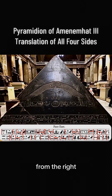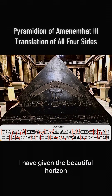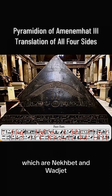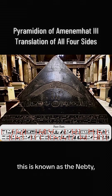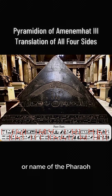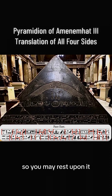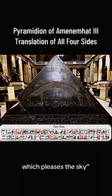Reading the second row from the right: Word spoken by the sovereign. I have given the beautiful horizon, the two ladies — which are Nehbet and Wajet, the vulture and cobra goddess protectresses of Upper and Lower Egypt. This is known as the Nepti, the third title or name of the pharaoh. Continuing: and he who takes the inheritance of the two lands, so you may rest upon it, which pleases the sky. Word spoken by the horizon: may you rest upon it, which pleases the sky.